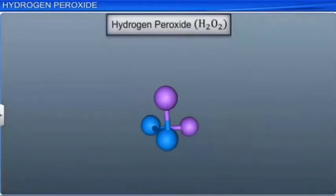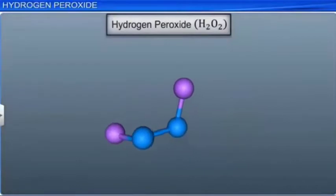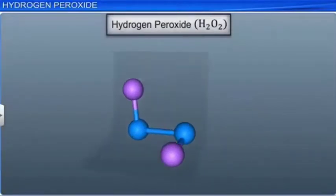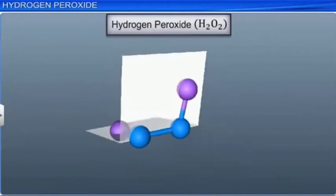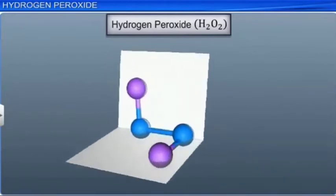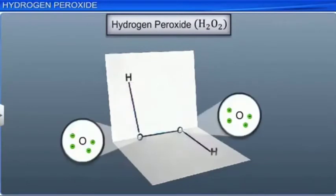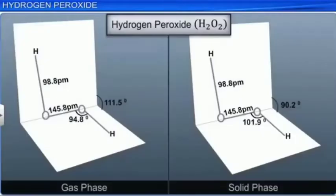Structurally, the hydrogen peroxide molecule is non-planar. It has an open book structure. The presence of lone pairs of electrons on the oxygen atoms and the hydrogen bonding gives the molecule a different structure in gaseous and solid phases.